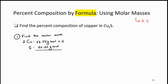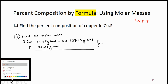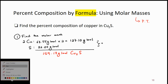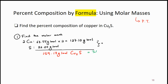The mass of sulfur is 32.07, again from the periodic table, and there's only one sulfur. If you multiply 63.55 by two, you get 127.10 grams per mole. Adding these two values — 32.07 plus 127.10 — you get 159.17 grams per mole, and that is the molar mass of copper one sulfide.